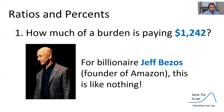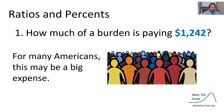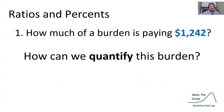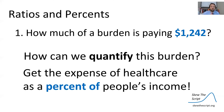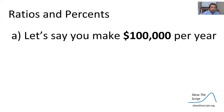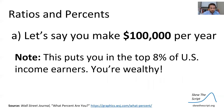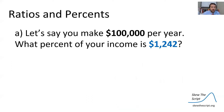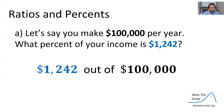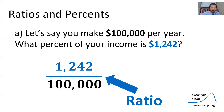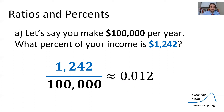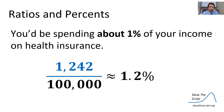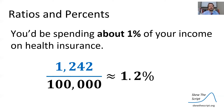For example, for billionaire Jeff Bezos, founder of Amazon, this is basically like nothing. For many Americans, though, this $1,242 can be a big expense. How can we quantify this burden? One way is to get the expense of healthcare as a percent of people's income. Let's say you make $100,000 per year, which puts you in the top 8% of U.S. income earners — you are wealthy at this level. What percent of your income is $1,242? We take 1242 over 100,000, which comes out to 0.012, or 1.2% — about 1% of your income on health insurance.